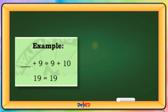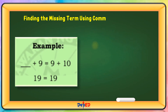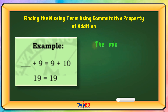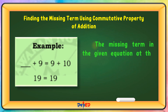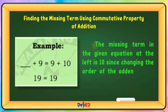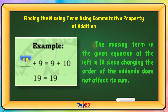Finding the missing terms using the commutative property of addition. The missing term in the given equation at the left is 10, since changing the order of the addends does not affect its sum. Our missing term is 10.